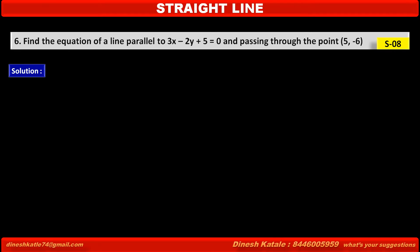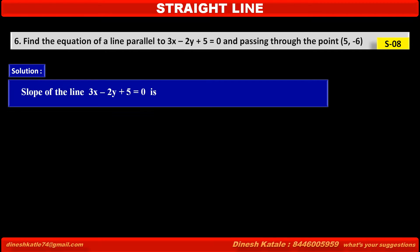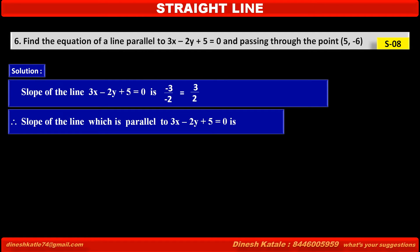Solution. The slope of the line 3x - 2y + 5 = 0 is minus coefficient of x upon coefficient of y, which is equal to -(-3)/(-2), that is, 3/2.